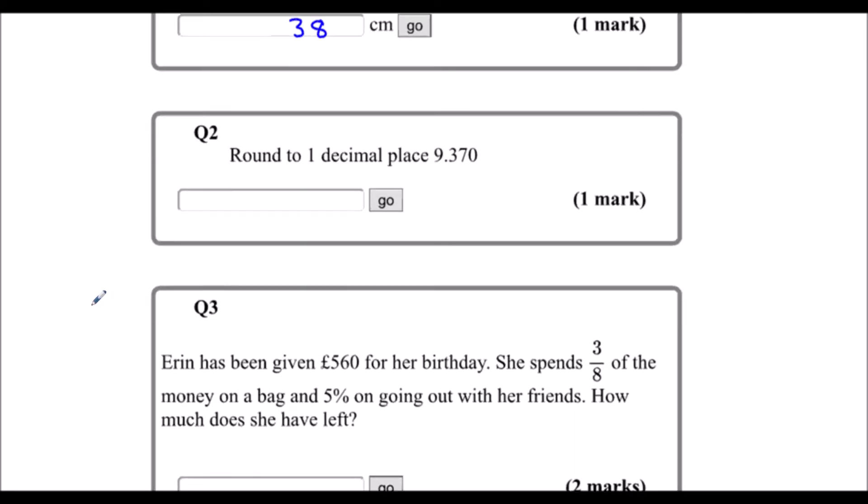Question 2. Round to one decimal place, 9.370. So one decimal place, one after the decimal point, so it's 9.3. But are we going to round it up to 9.4? We've got a 7 as the next digit, and if it's 5 or above, we round up. So we're going to say it's closer to 9.4 than 9.3, so we're going to round it to 9.4.